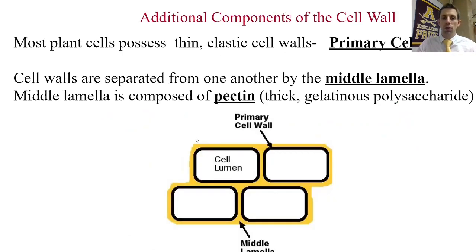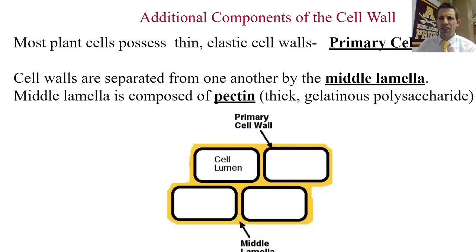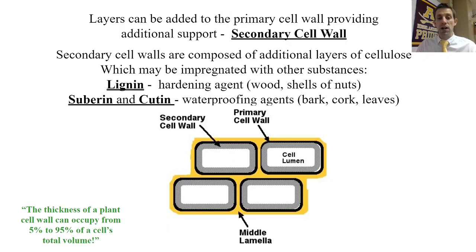Every plant cell has what's called a primary cell wall — shown as the black bar on the outside of cells in the diagram. Notice the yellow space in between cells; it has a special name: the middle lamella. That space is filled primarily with water and a substance called pectin, which is a thick, gelatinous polysaccharide — a type of carbohydrate often used as a thickening agent in cooking.